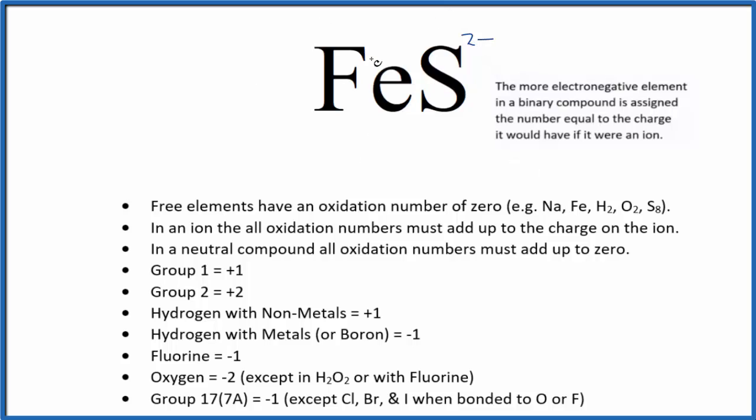So in order for all this to add up to zero, since it's a neutral compound, iron has to be plus 2. And that's because the sulfide ion would be 2 minus. Its oxidation number would be minus 2.